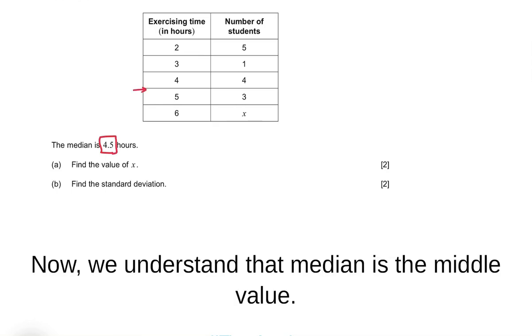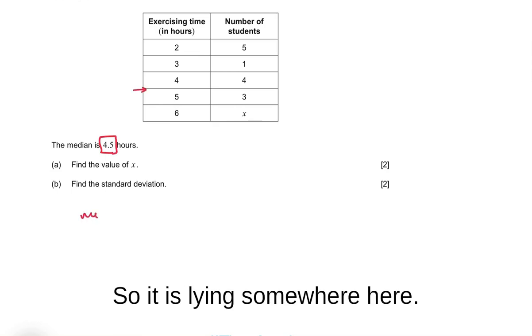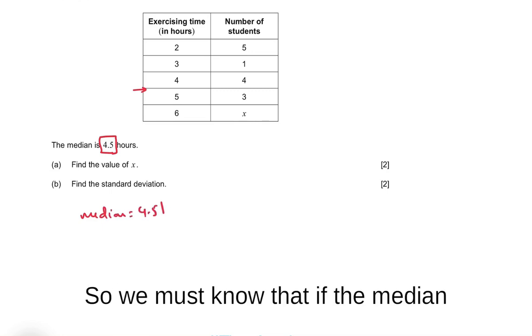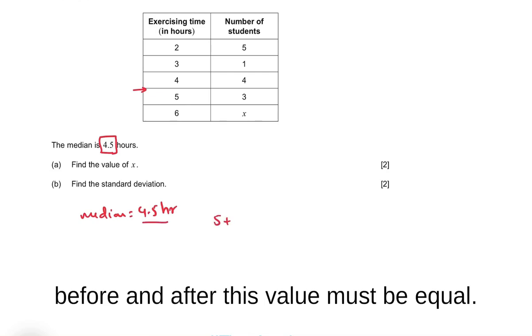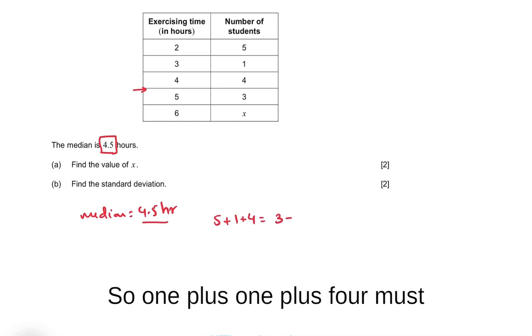Now we understand that median is the middle value, so it is lying somewhere here. So we must know that if the median is 4.5 hours, the number of students before and after this value must be equal.